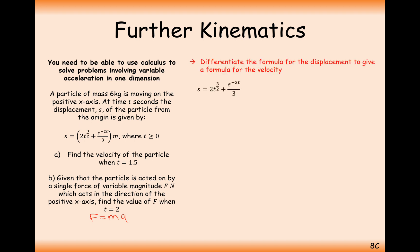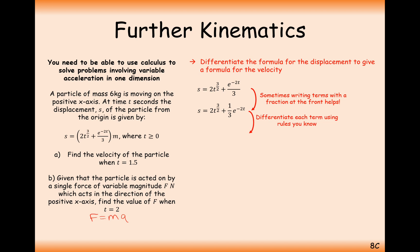Part a asks for the velocity when t equals 1.5. We have a formula for displacement, so we differentiate to get velocity. Rewriting the expression in a form that's easier to differentiate: for the t to the power 3/2 term, we multiply the power to the front and reduce the power by 1. For the e term, e stays the same but the minus 2 gets multiplied to the front. No plus c needed for differentiation. Substituting t equals 1.5 and using a calculator gives 3.64 meters per second.